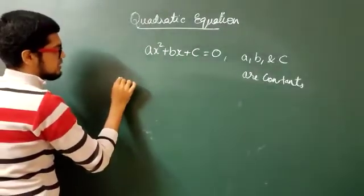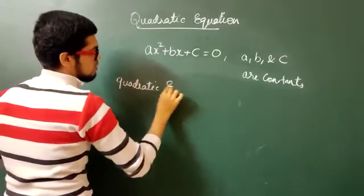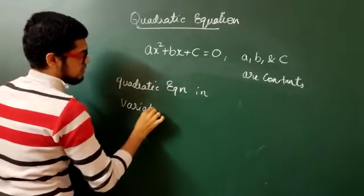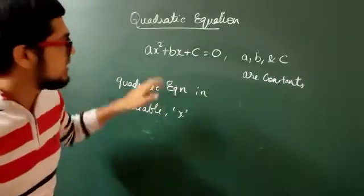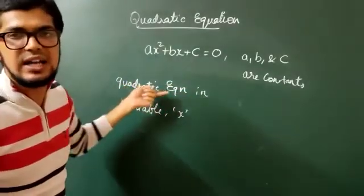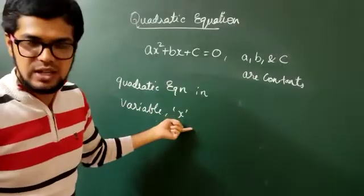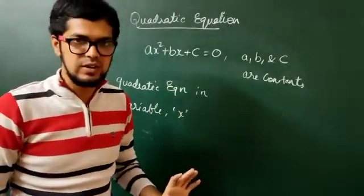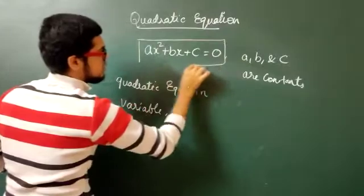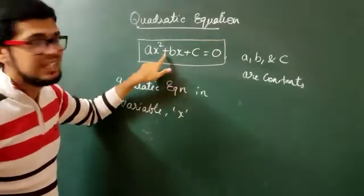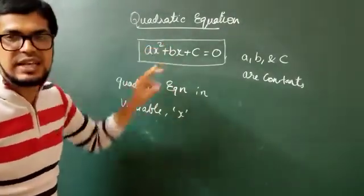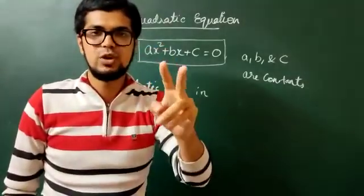It is a quadratic equation in variable X. Suppose if I take the variable as Y — that is Y squared, Y, and so on — it will be called a quadratic equation in the variable Y. One more thing to learn from this equation is the highest degree: the highest degree of this variable cannot exceed 2. The maximum power of variable X can only be 2; it cannot be 3, it cannot be 4, and it cannot be 1.